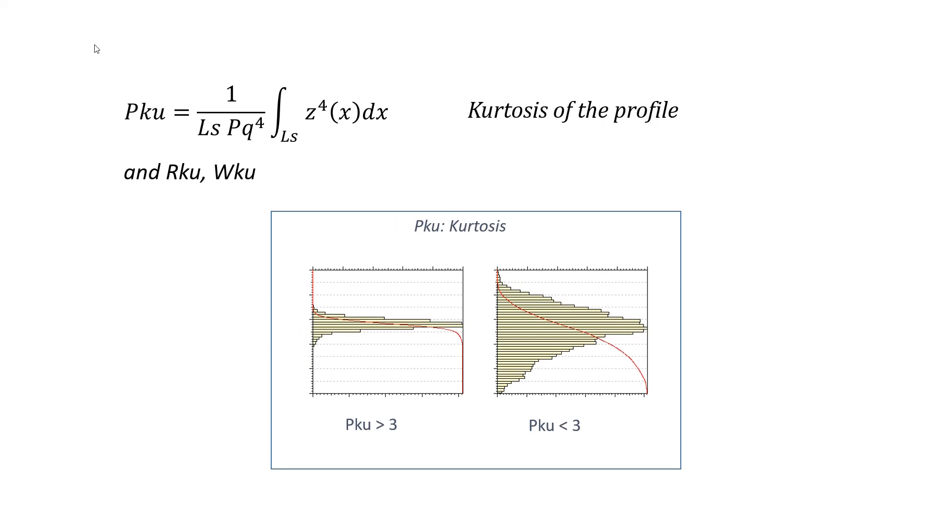PKU qualifies the dispersion of the height distribution, also called kurtosis, between the min and max values. If its value is significantly larger than 3, then the distribution is narrow with a few extreme points above and below. Most points are concentrated around the mean value. A small value of PKU means that heights are spread more or less regularly between the min and max values. It is another way to describe the texture morphology. However, skewness and kurtosis are pretty sensitive to the presence of extreme points such as outliers, so they should be used carefully.